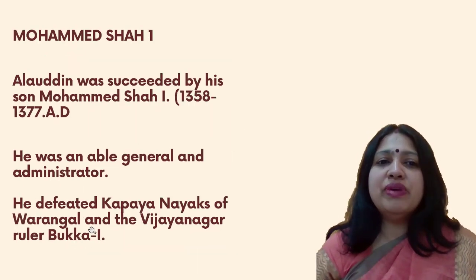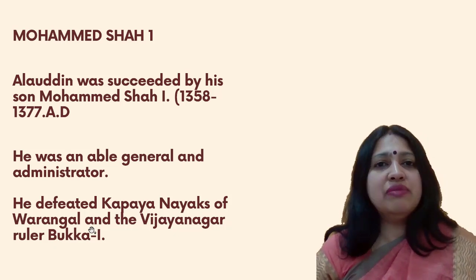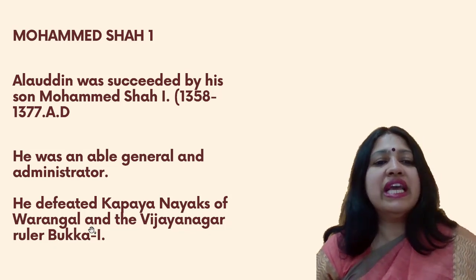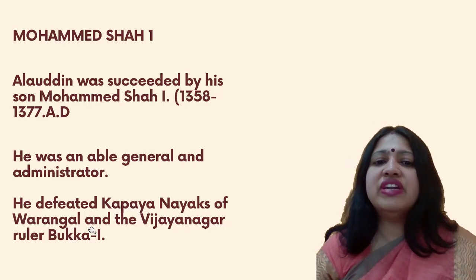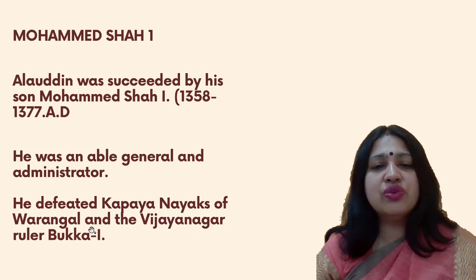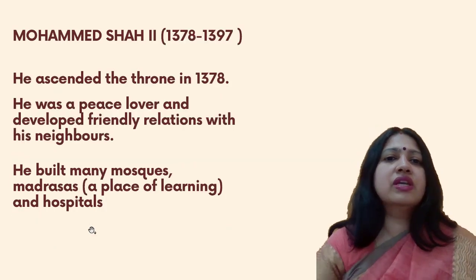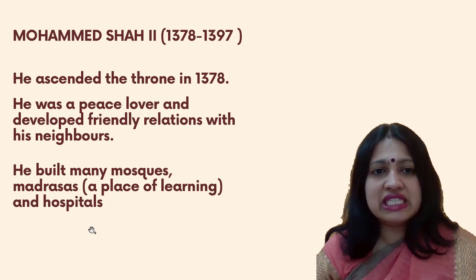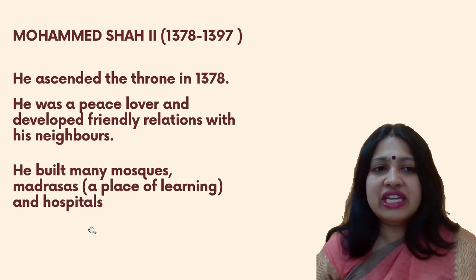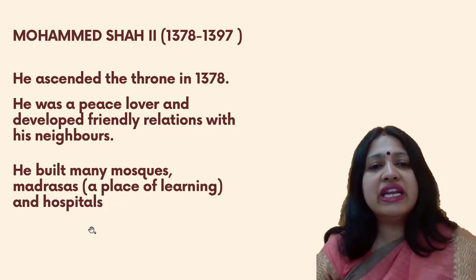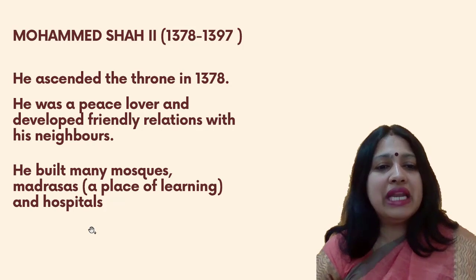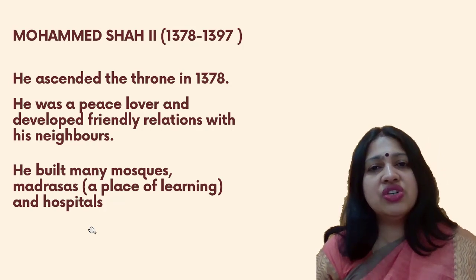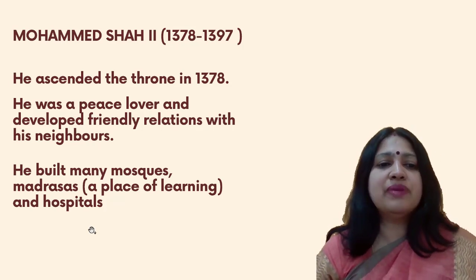After Allahudin, he was succeeded by his son Muhammad Shah I, who ruled from 1358 to 1377 AD. He was an able general and administrator who defeated the Kapayanayaks of Warangal and the Vijayanagara ruler Bukka I. The next ruler was Muhammad Shah II, who ruled from 1378 to 1397. He was a peace lover who developed friendly relations with his neighbours and built many mosques and madrasas — places of learning, equivalent to today's universities — as well as hospitals.